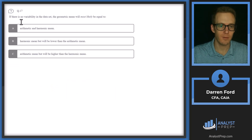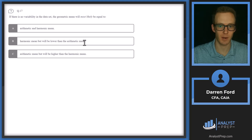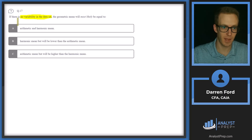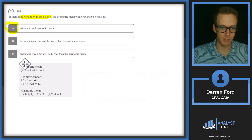Question 17: if there is no variability in the data set, the geometric mean will most likely be equal to A) both arithmetic and harmonic mean, B) harmonic mean but lower than arithmetic mean, or C) arithmetic mean but higher than harmonic mean. When there's no variability in the data set, all return streams are the same, leading to an outcome where arithmetic mean, harmonic mean, and geometric mean are all equal. Let's use an example to demonstrate.